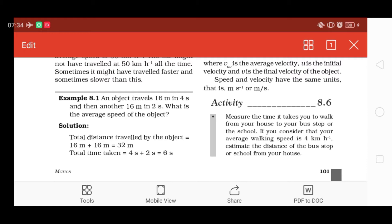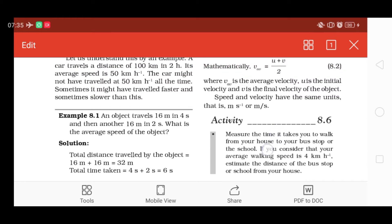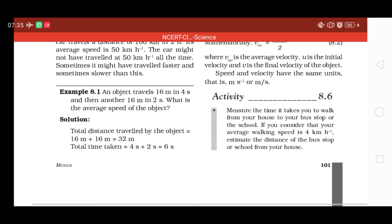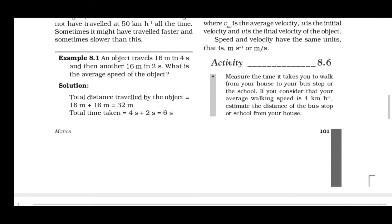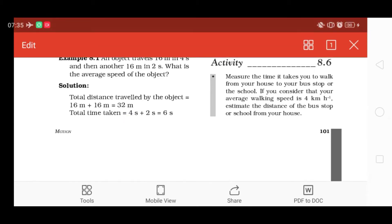Half the time में ही वो 16 meter cover कर लेगा. What is the average speed of the object? हम लोगों को average speed बतानी है, तो total distance upon total time — average speed का formula होता है। Total distance traveled by the object: 16 meter in first 4 seconds and then 16 meter in 2 seconds — total distance equals 16 + 16 = 32 meter.